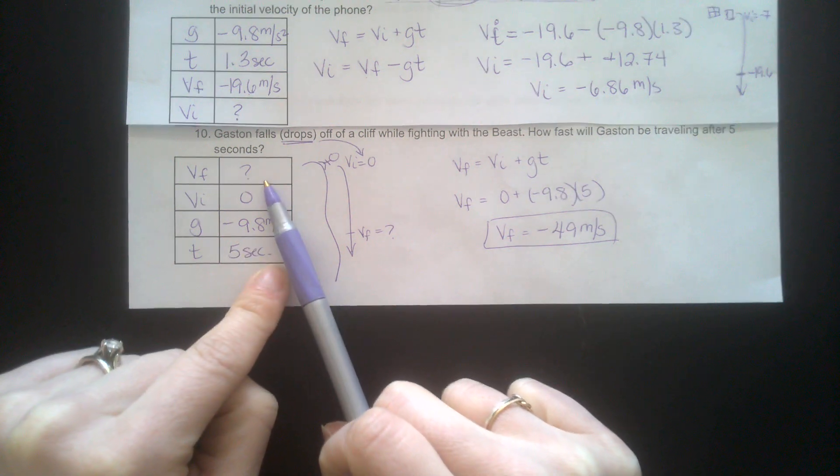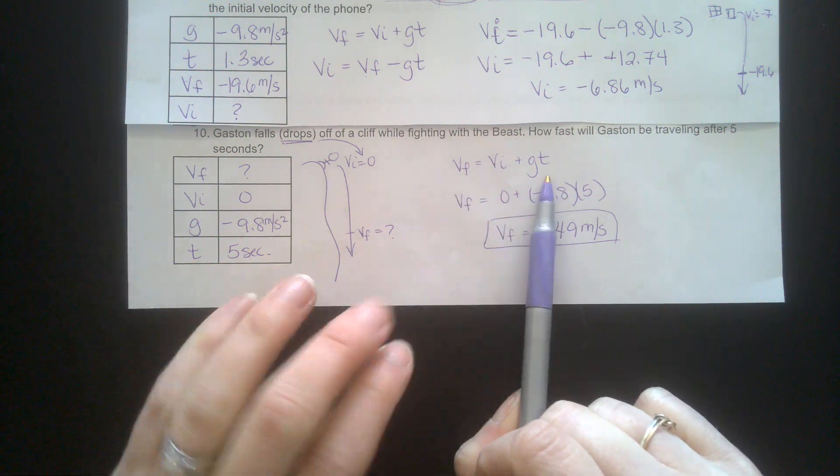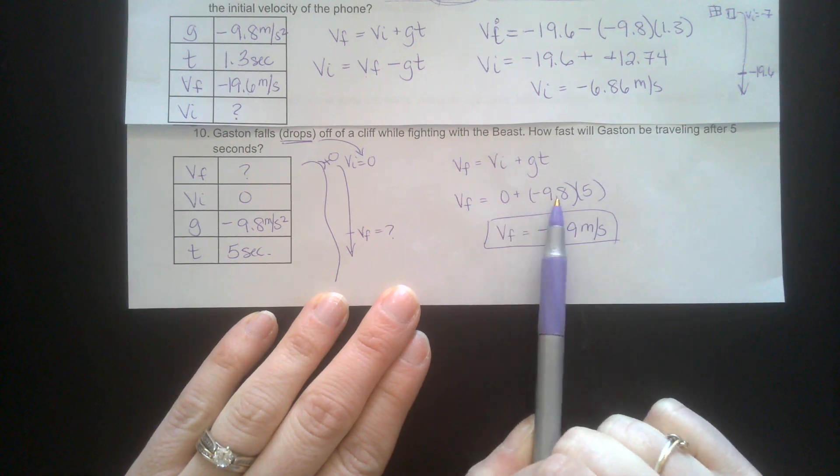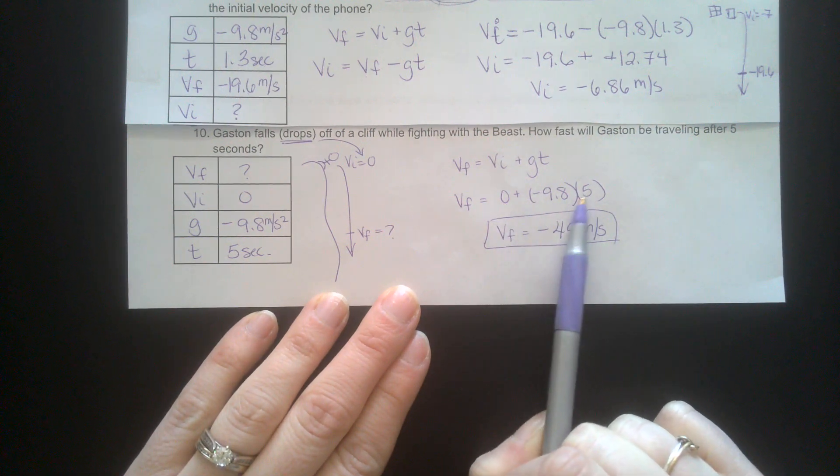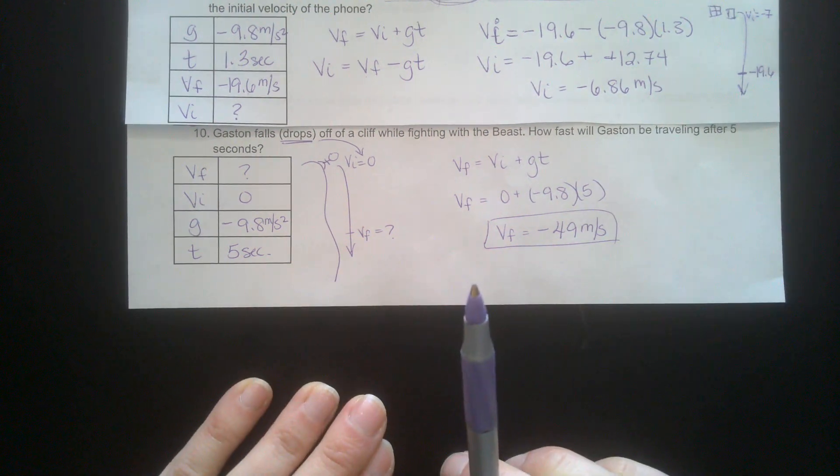Here's the freefall equation already set up for us to solve for VF. Vi is 0 plus Gt. So really, you're just multiplying 9.8 times 5. You get negative 49 meters per second.